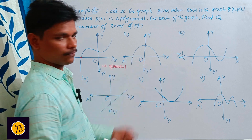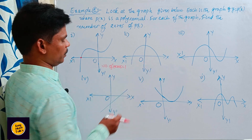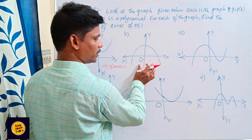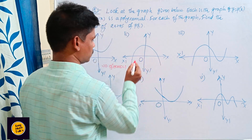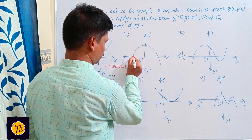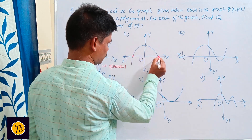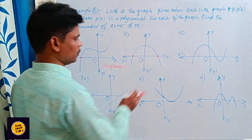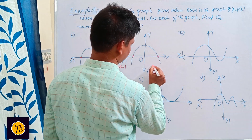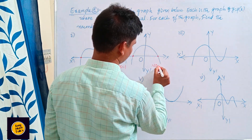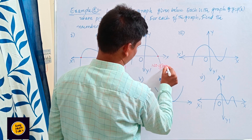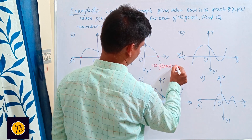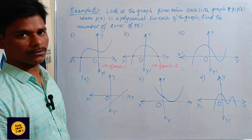See this polynomial graph. The graph intersects the x-axis at two points — this point and this one. So the number of zeros is equal to two.